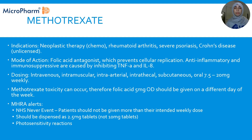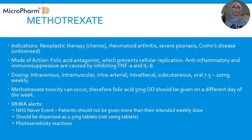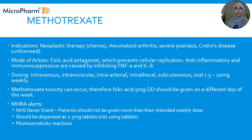Methotrexate has a few MHRA alerts because there is a lot to it. First, there's an NHS never event: we should never give patients more than their intended weekly dose, as this has previously led to patient harm. Second, we always dispense the 2.5 mg tablets — always the same strength — because the dose can range from 7.5 to 20 mg, and using different tablet strengths could lead to confusion and the wrong weekly dose being taken. Third, there is an MHRA warning about photosensitivity reactions as a side effect of methotrexate.